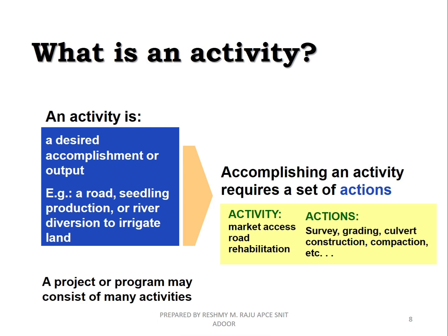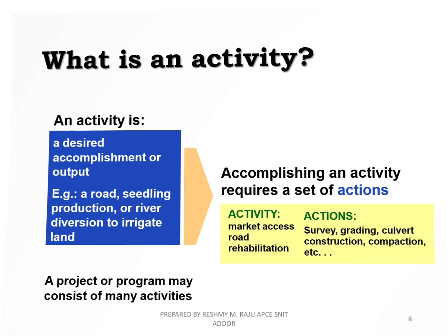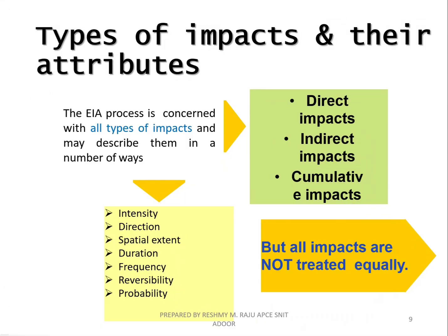What is the activity we want to do? We could have a road, a steel production facility, or an irrigation river. There are different actions involved — for example, survey activities. These actions produce different impacts, which have attributes. There are three types of impacts: direct impacts, indirect impacts, and cumulative impacts.